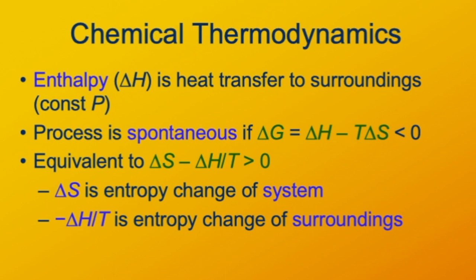This is equivalent if you multiply both sides of the equation by the temperature. Delta S minus delta H over T has to be greater than zero. Delta S is the entropy change of the system. Minus delta H over T is the heat transferred from the system to the surroundings. So it's the heat absorbed by the surroundings. So minus delta H is the heat absorbed by the surroundings. Minus delta H over T is the entropy change of the surroundings.